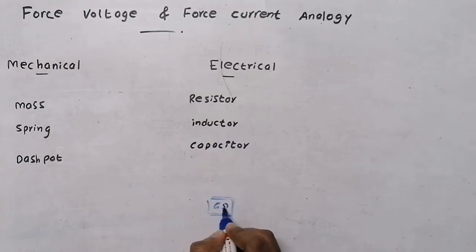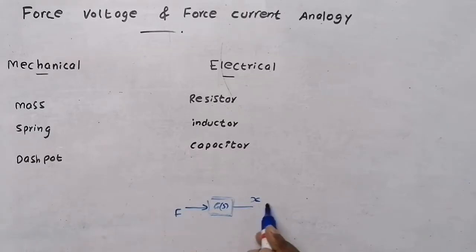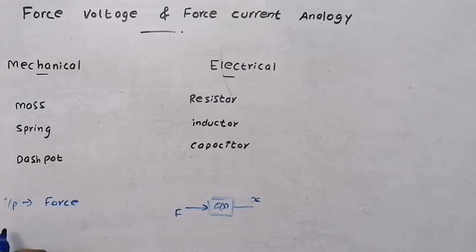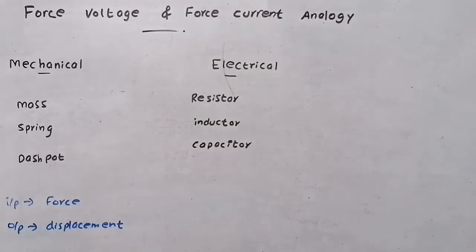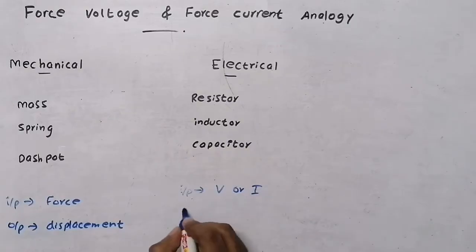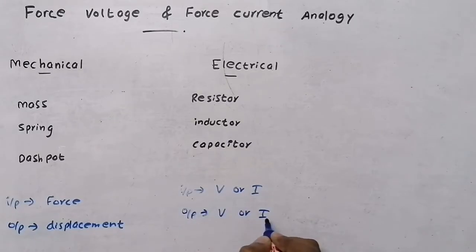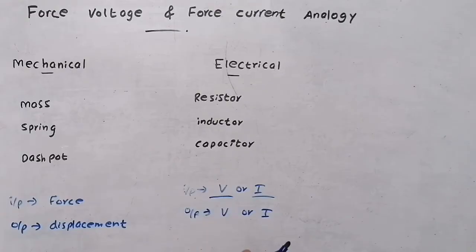Consider a system G(s). If I give an input force, the object will move with a displacement x — so in a mechanical system, input is force and output is displacement. Now in an electrical system, input can be either voltage or current, and output can also be either voltage or current. Since there are two types of input, we make two analogies: force-voltage and force-current.